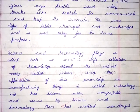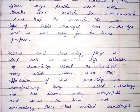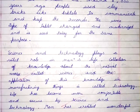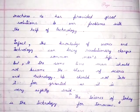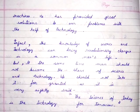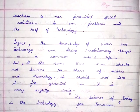Science and technology plays a vital role in man's life. Collection of knowledge about the natural world is called science, and the application of this knowledge in manufacturing things is called technology. Life has become more comfortable and secure by science and technology. Man has created wonderful machines and provided great solutions to our problems with the help of technology. In fact, the knowledge of science and technology can bring revolutionary changes in a common man's life. But at the same time, man should not become the slave of science and technology.